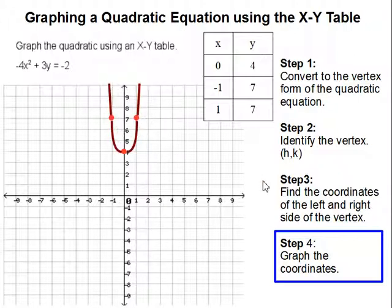And this is the graph of negative 4x squared plus 3y equals negative 2. And this completes our problem.